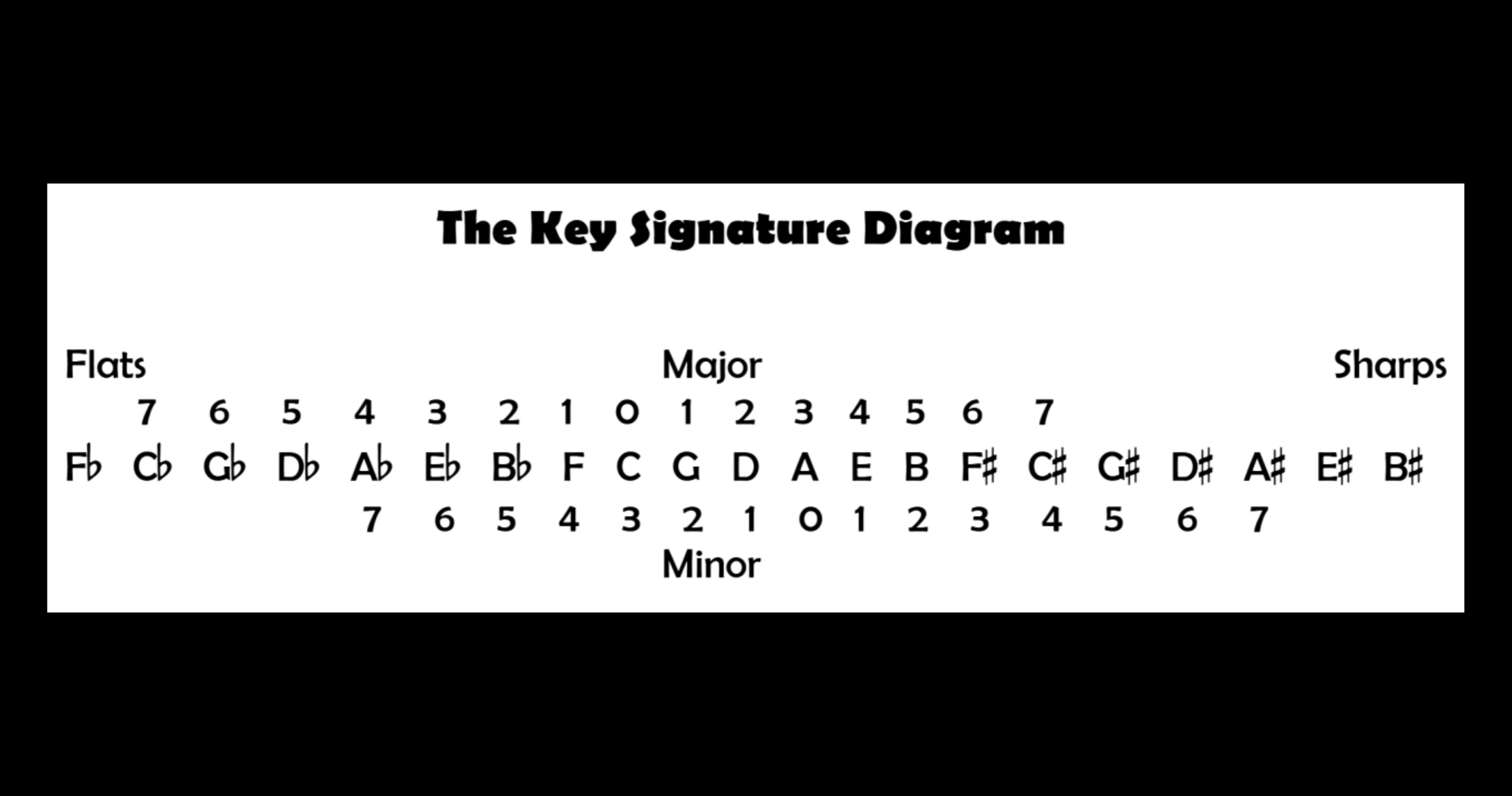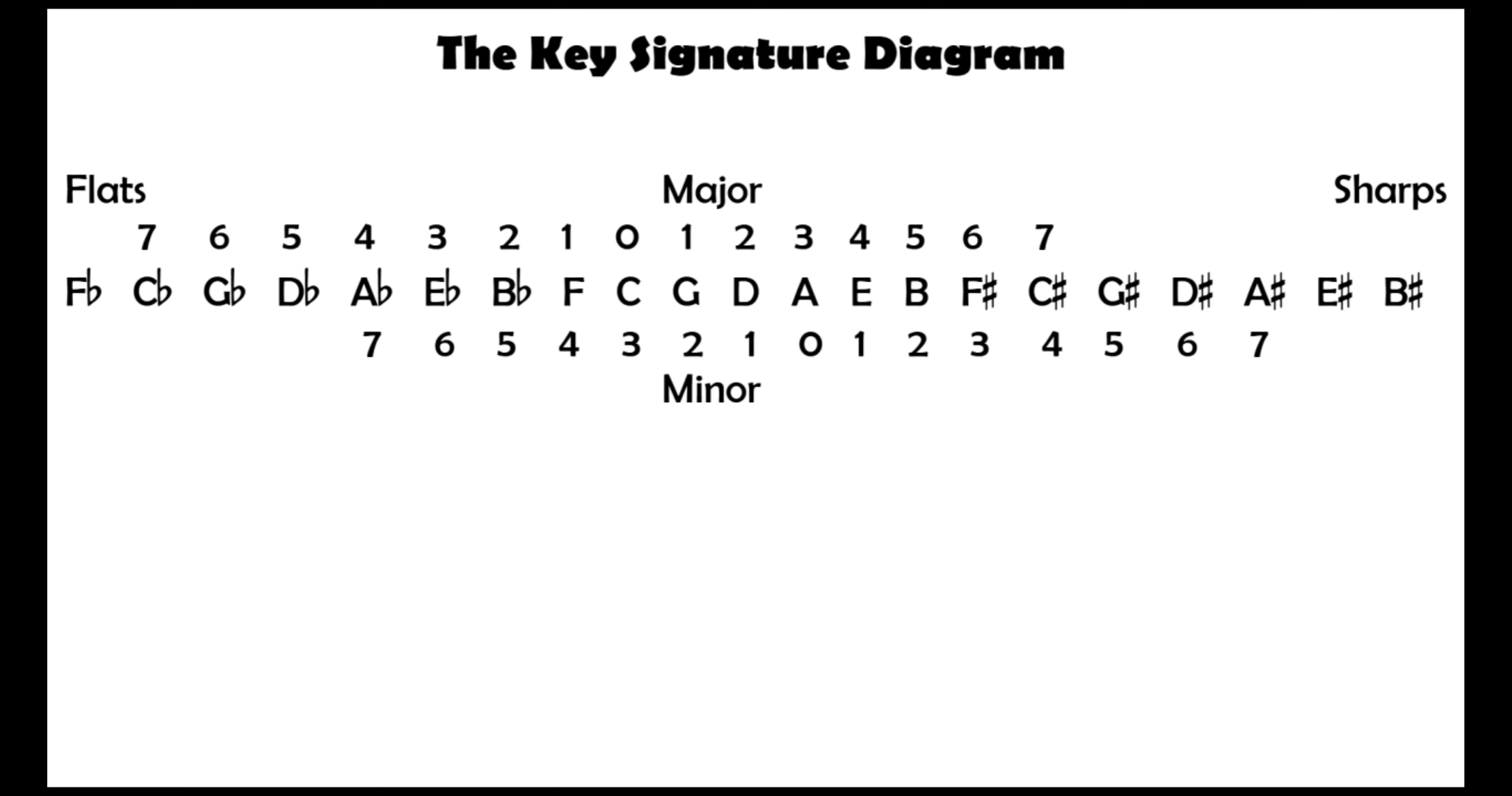Let's say a question asks us how many sharps or flats are in the key signature of A flat major. Find A flat in the diagram. It's major, so look at the number above. This number 4 is to the left of the 0, so that means it's a flat key signature.